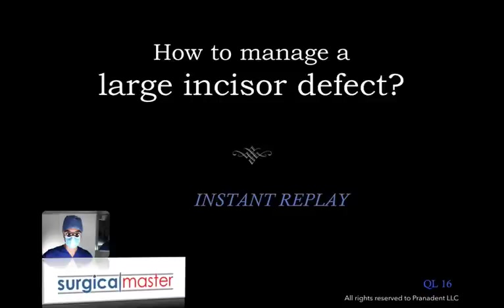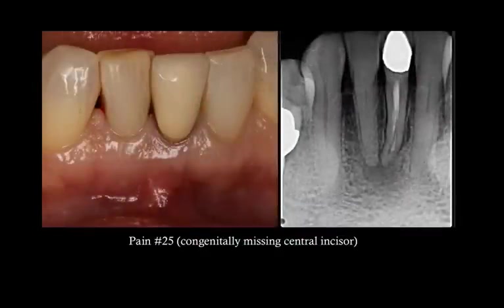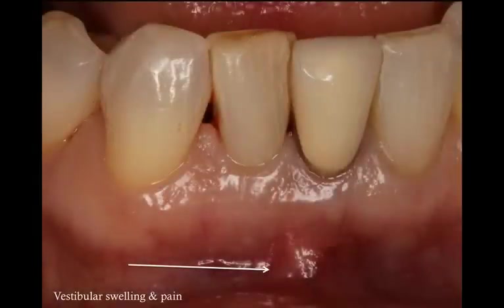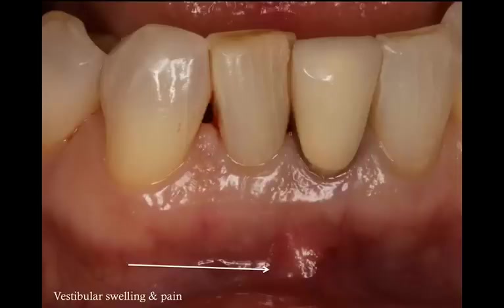In this instant replay, I'm going to talk about how to manage a relatively large buccal defect after extracting a lower incisor. This patient came in with pain on tooth number 25, a central incisor, very sensitive on percussion. Looking at the radiograph, I noticed a large periapical lesion extending not just on the central incisor but also to the lateral incisor, number 26. I looked at the vestibule and noticed some swelling; palpation caused pain and it felt very rubbery and depressible, suggesting infection extending from the tooth that dissolved some of the buccal plate — a relatively large abscess.